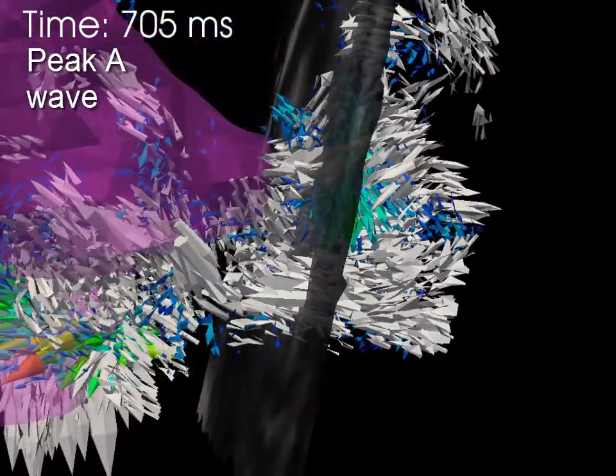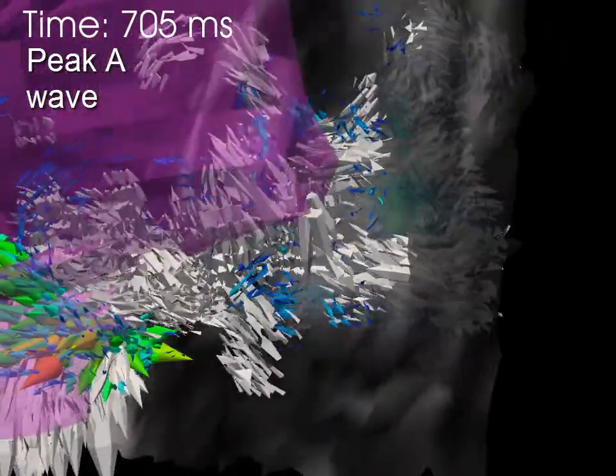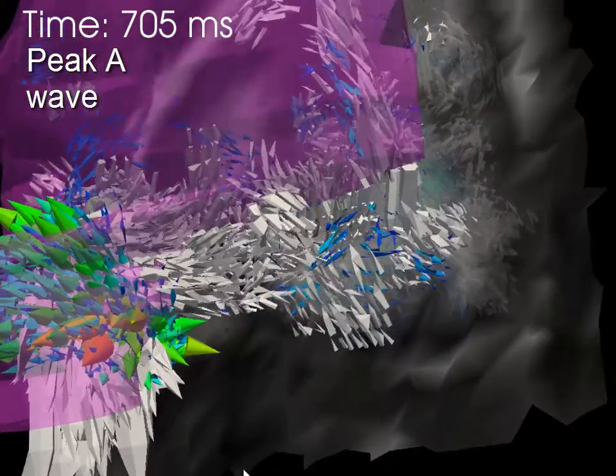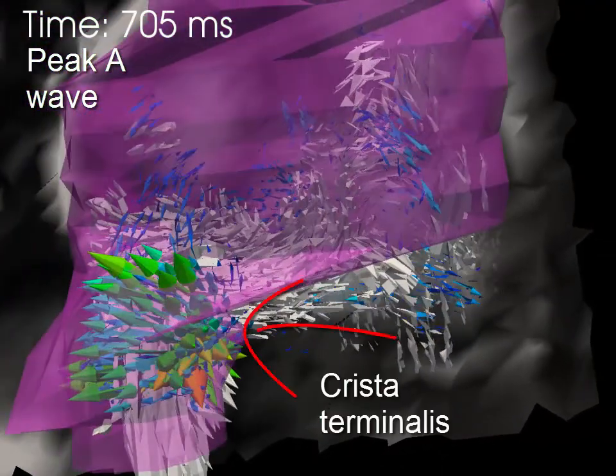This flow also generates high vorticity at the crista terminalis.